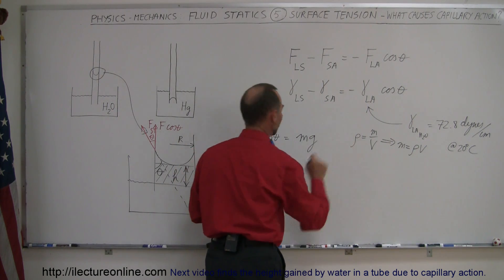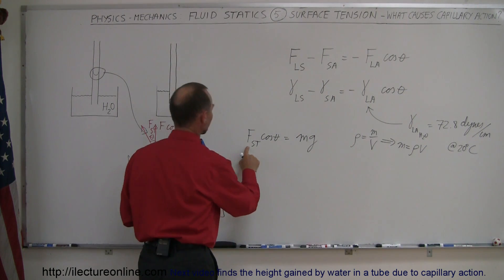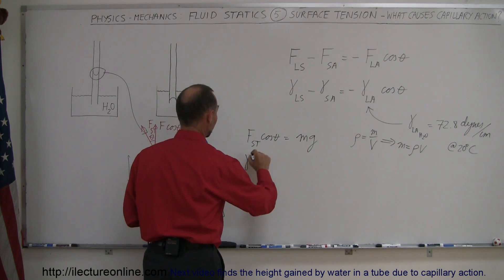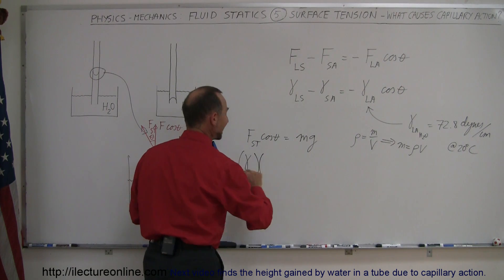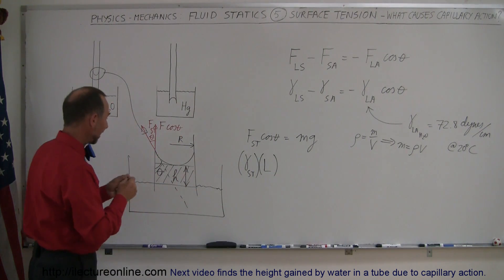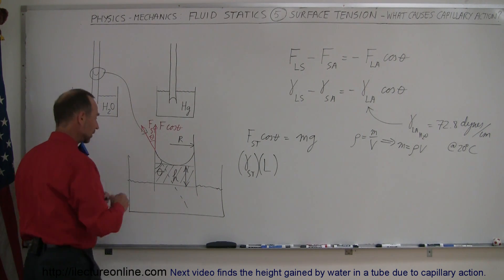So we can replace mass by density and volume. And the force of the surface tension, that can be written as the coefficient of the surface tension times the length along which that surface tension acts. And in this case, that length would be, and let me use a different color here,